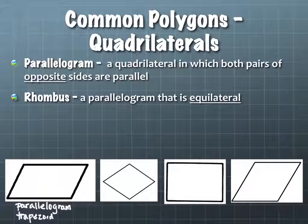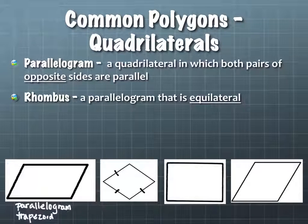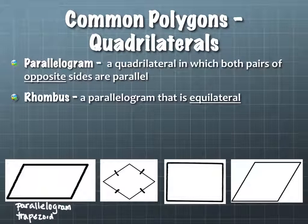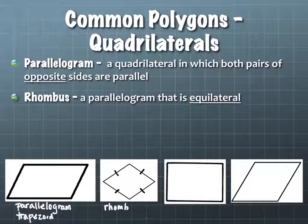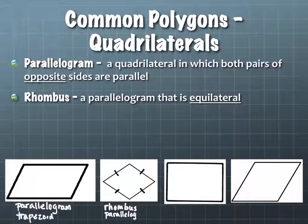The second one looks like a rhombus. With all sides marked, it's obvious they are all congruent, so this would be a rhombus. But a rhombus is also a parallelogram, and a parallelogram is also a trapezoid.